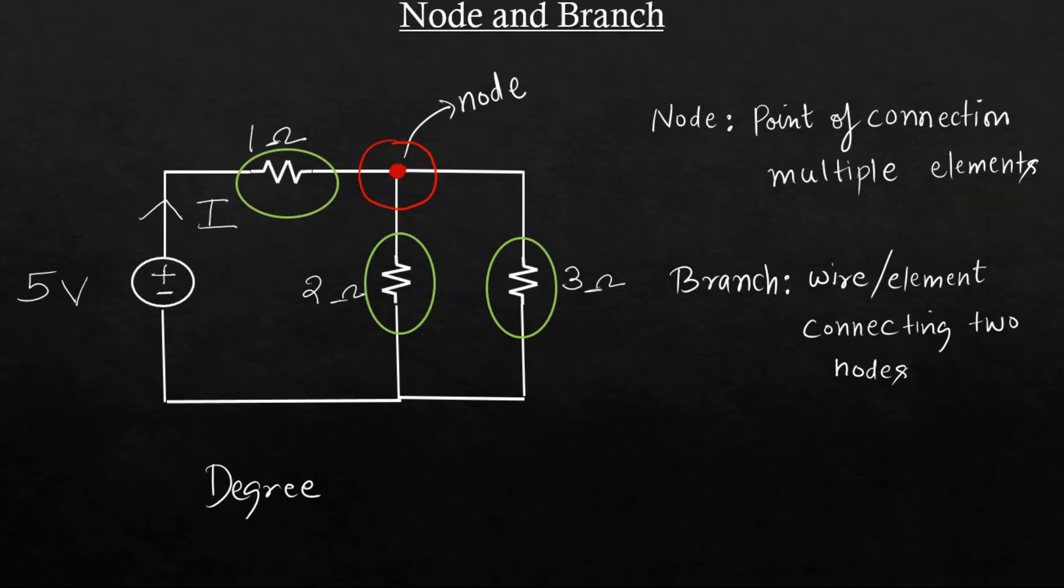Like if you see here we have three branches. So the degree of this node is equal to 3. If there are only two elements connected, like if you see this node, it has a voltage source and it has a resistance. So degree is equal to 2.